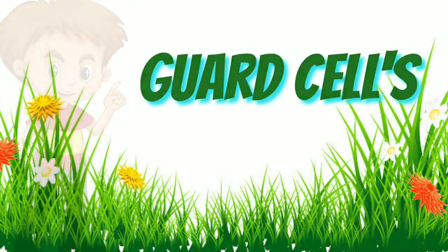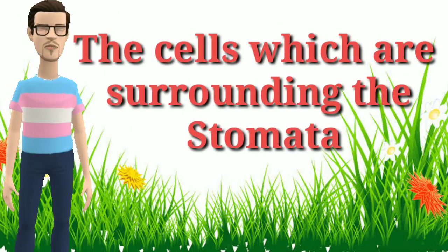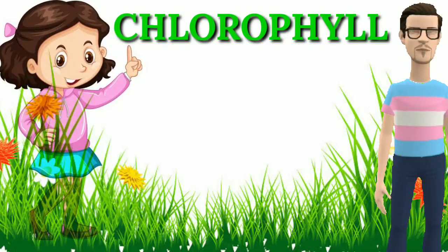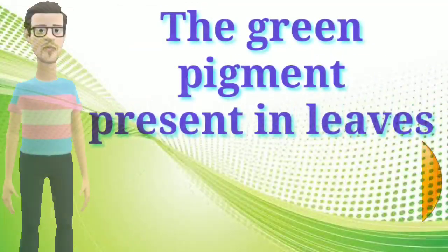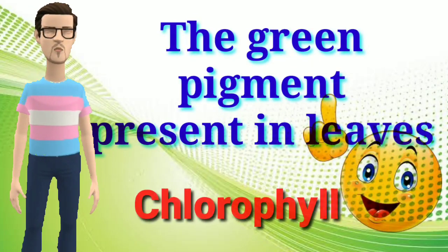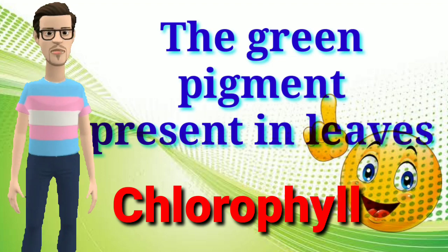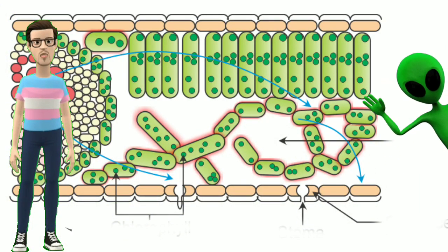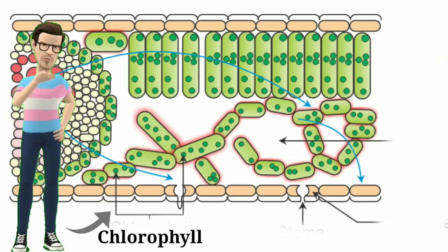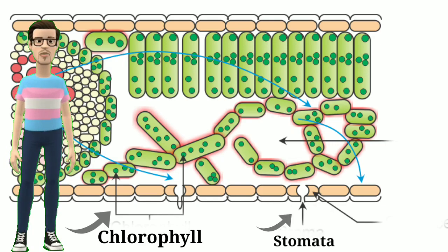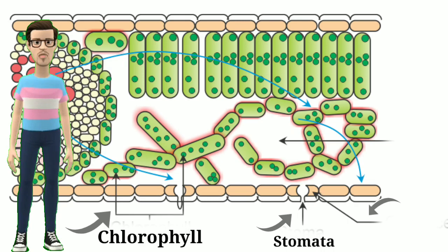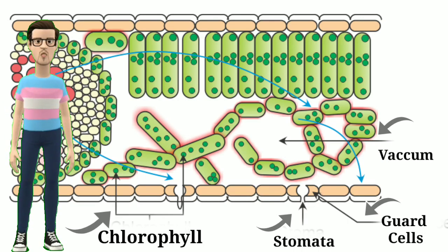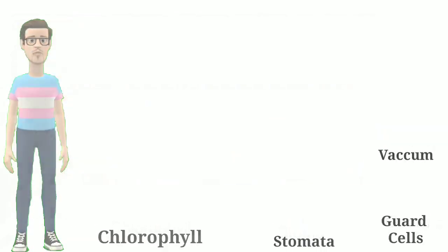The next word is guard cells — the cells surrounding the stomata. Next is chlorophyll, which you came across in 6th standard. The green pigment present in the leaves is called chlorophyll, due to which all leaves look green. In the cross-section of a leaf, the marked parts are: chlorophyll in green color, an open stomata, guard cells, and lastly the vacuole.